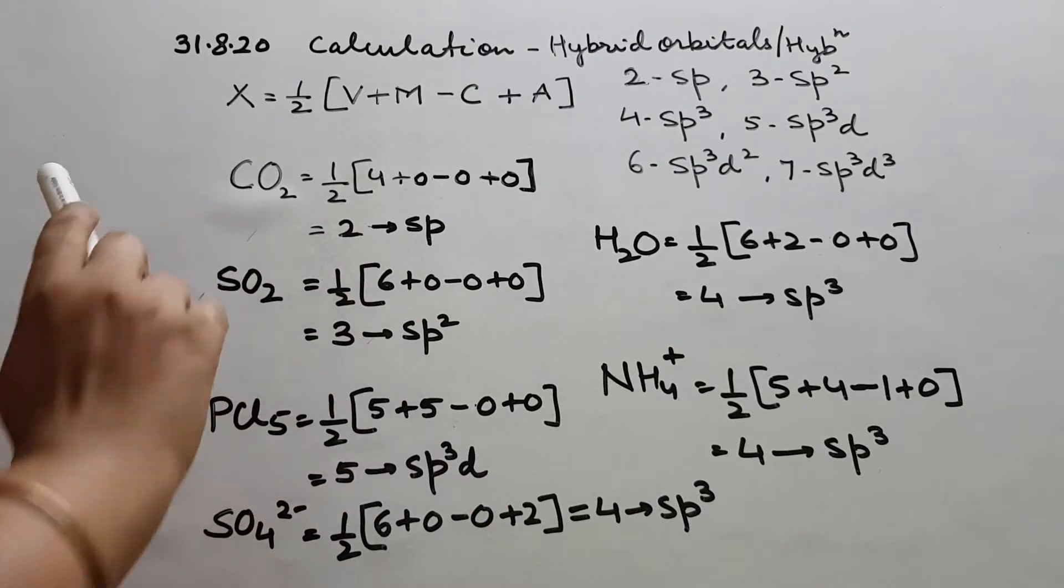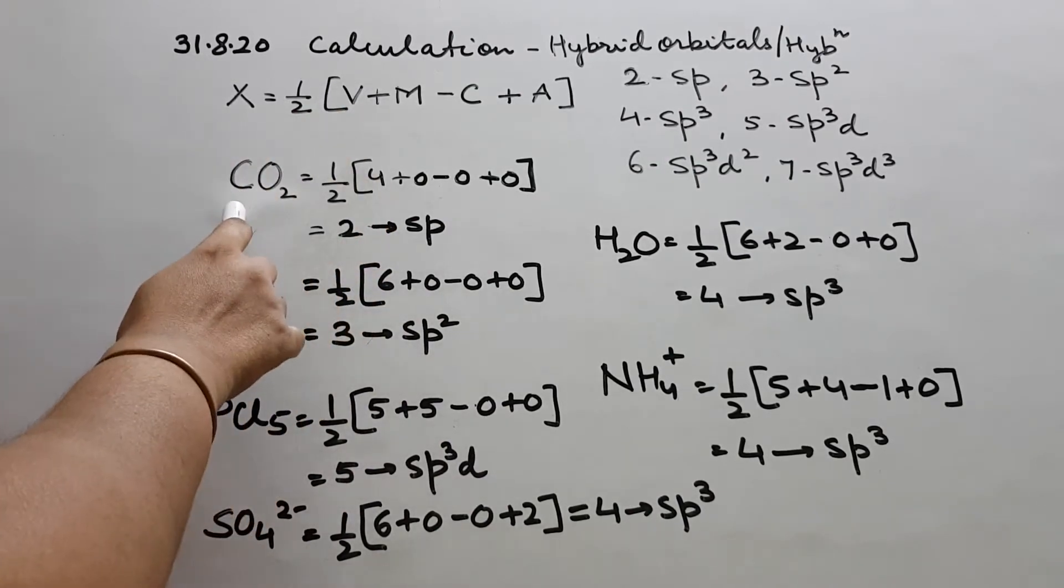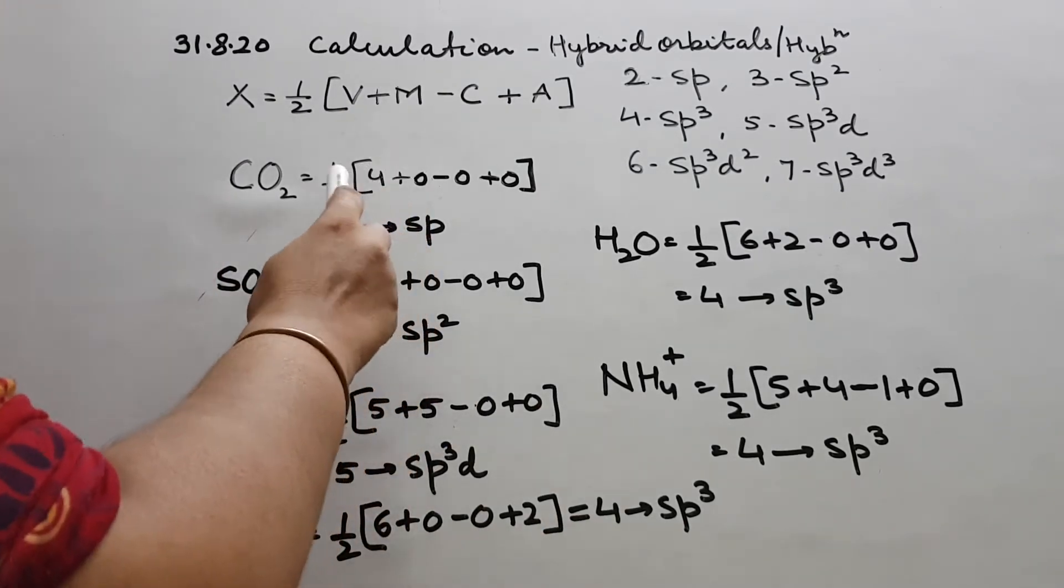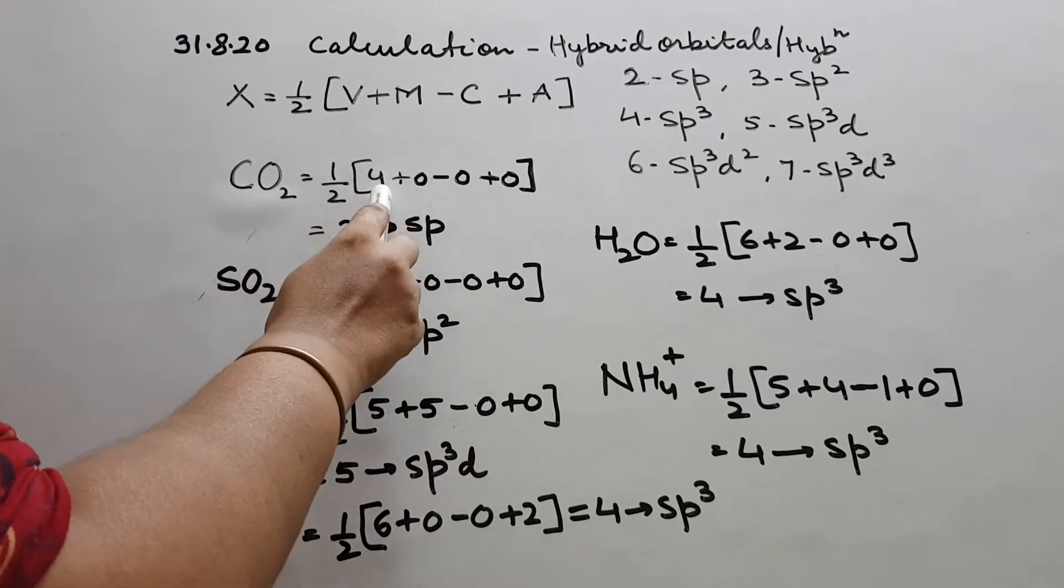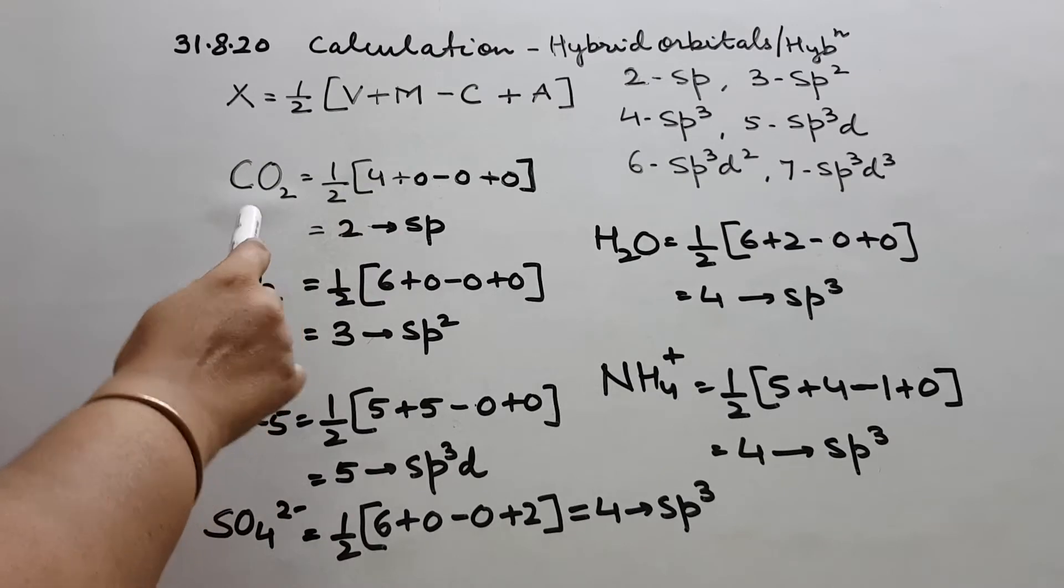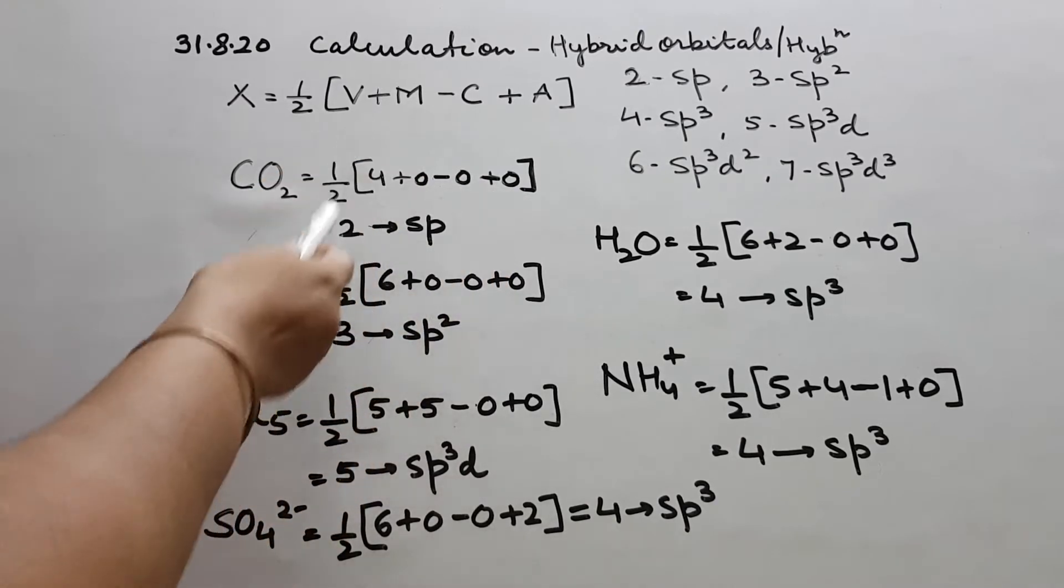So suppose it is CO2. Carbon, half. Central atom is carbon. Its valence shell has got 4 electrons we all know. So half, within brackets 4. There is no monovalent atom around it. It is O, it is not monovalent so it is 0. No charge of cation, no charge of anion. 4 by 2 is 2.